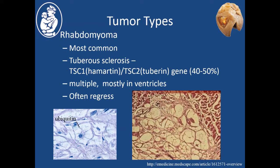One theory for spontaneous regression is that the spider cells, which are part of the histology of rhabdomyomas, have a microtubule system with a large component of ubiquitin. Ubiquitin is a protein added to structures within cells that are planned for destruction. Adding ubiquitin to the microtubular system seems to put it in line for destruction, resulting in apoptosis of the cell. This may be one mechanism by which rhabdomyomas spontaneously regress.